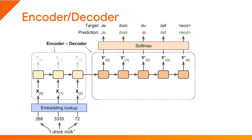At each timestep, the decoder estimates the probability of each possible output token. In a very basic translation system, it would just greedily output the most likely word at each timestep. But a smarter system can try to find the most likely sequence of words — this is called beam search, done at inference time, not training time. If we just train this model as-is, it won't work very well and needs a bunch of tweaks.